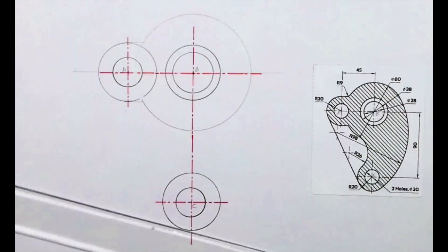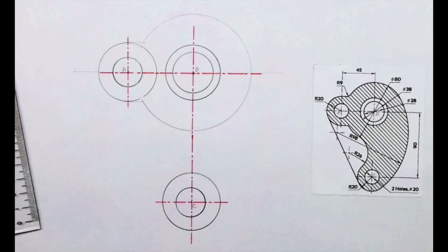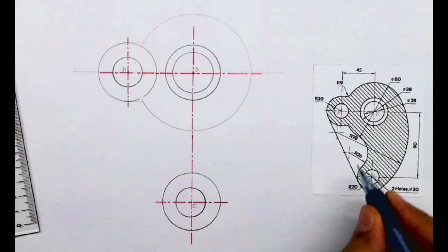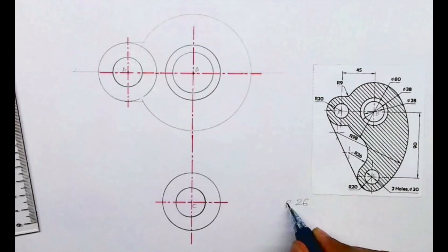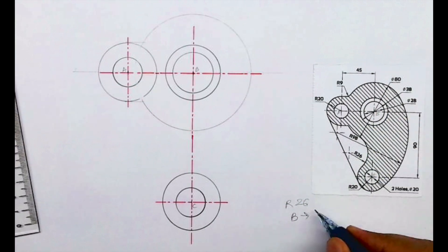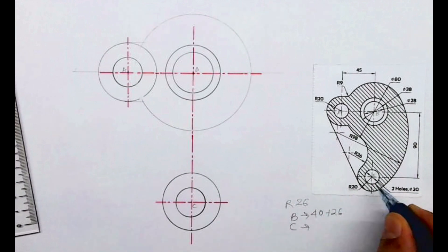Now we need to draw this arc. See, first we'll start with this smaller arc, radius 26. If you see, it is merging with this radius 40, so from B I will cut 40 plus 26, and from C I will cut 20 plus 26.